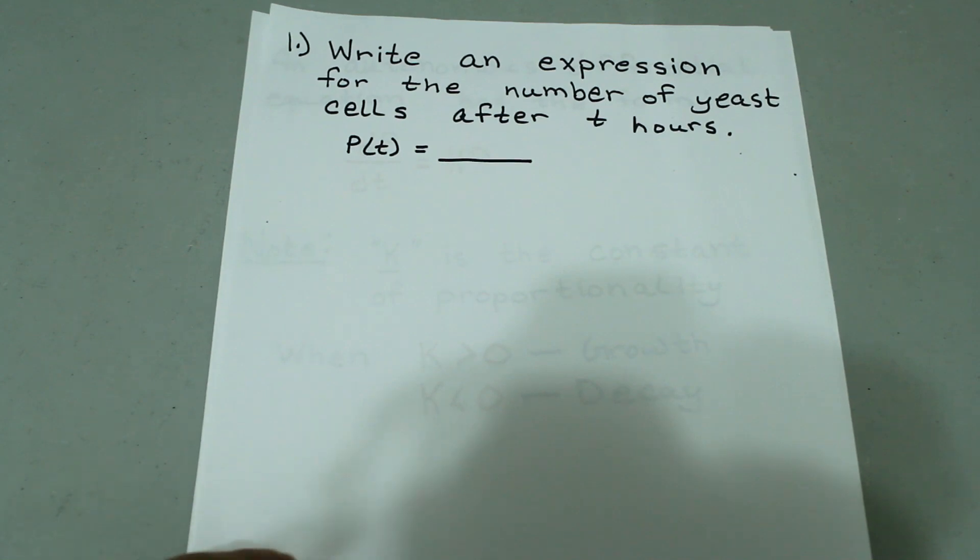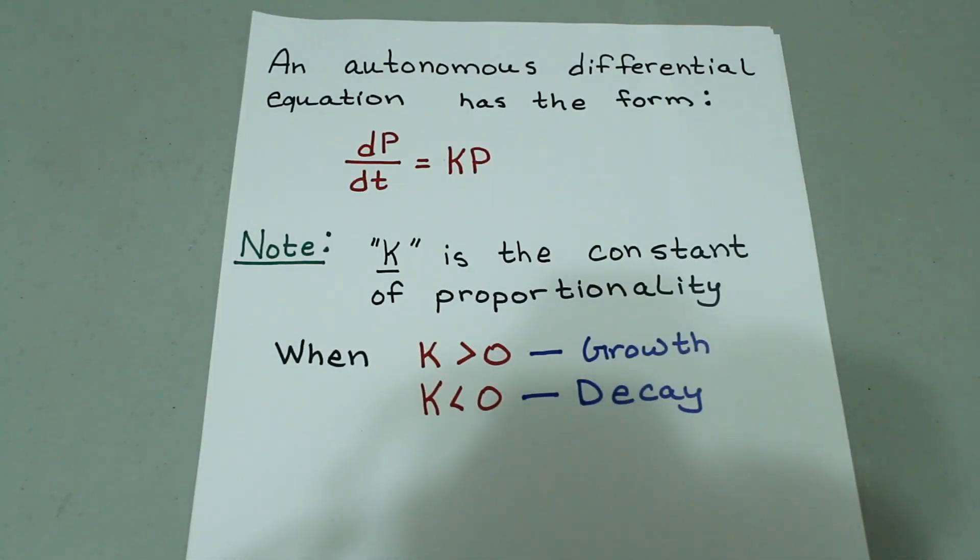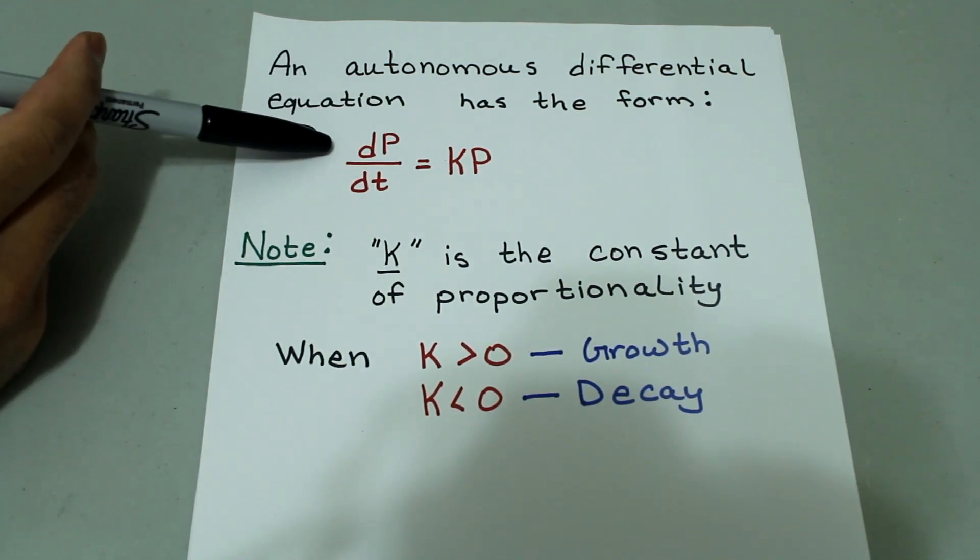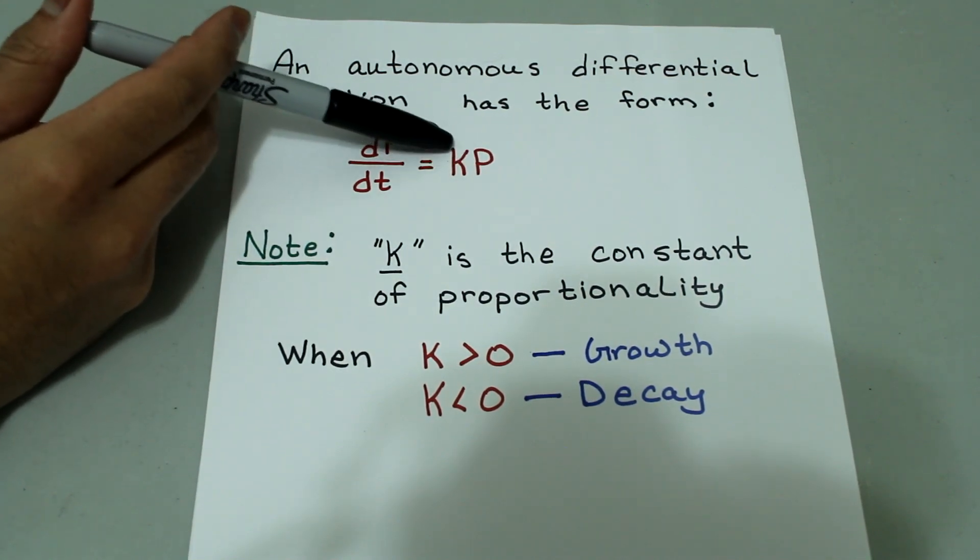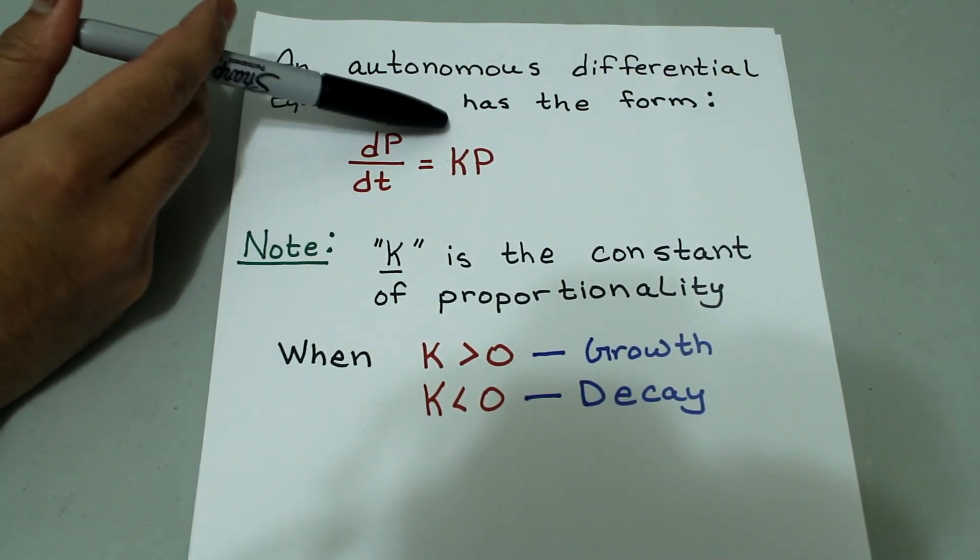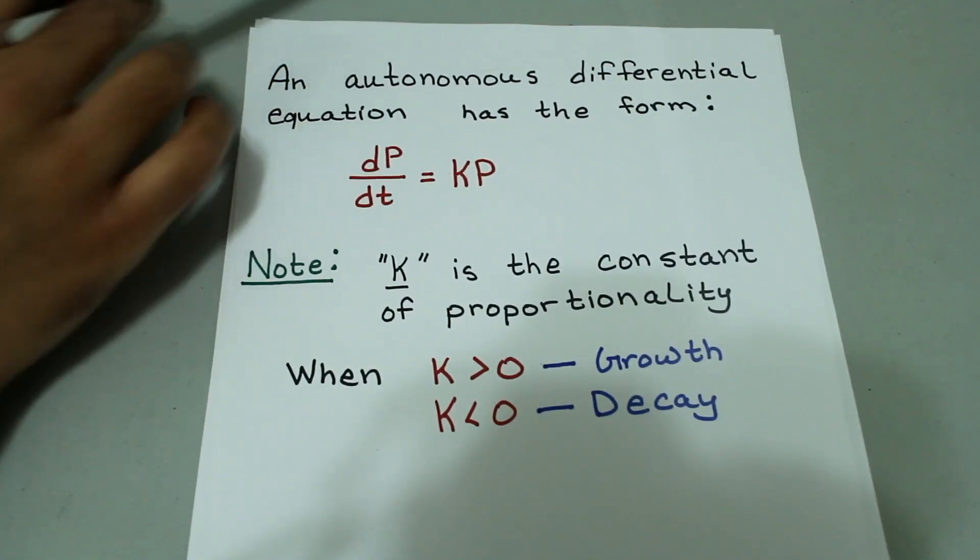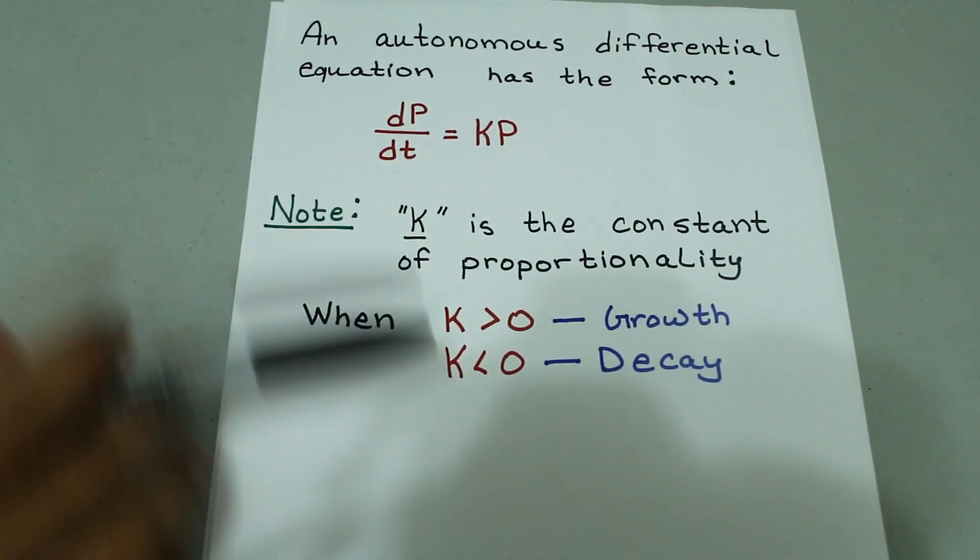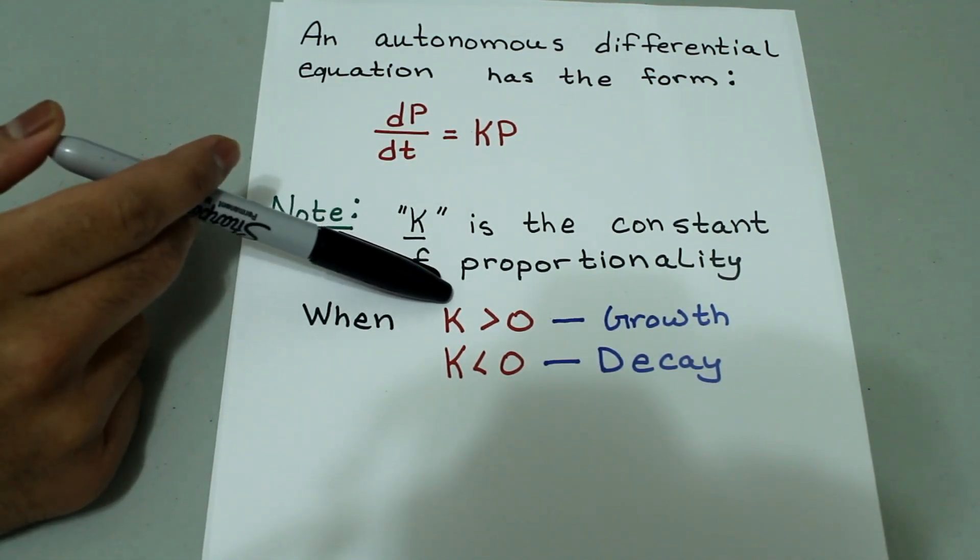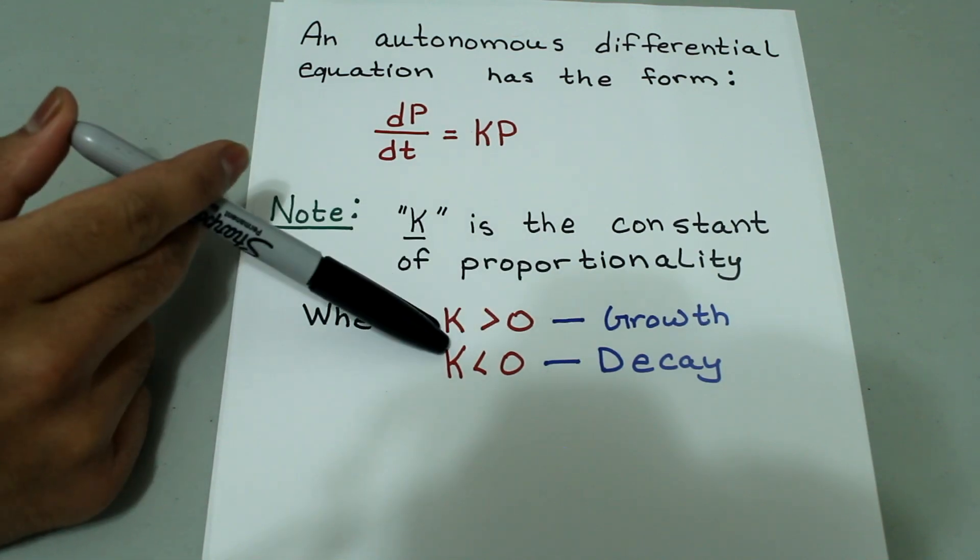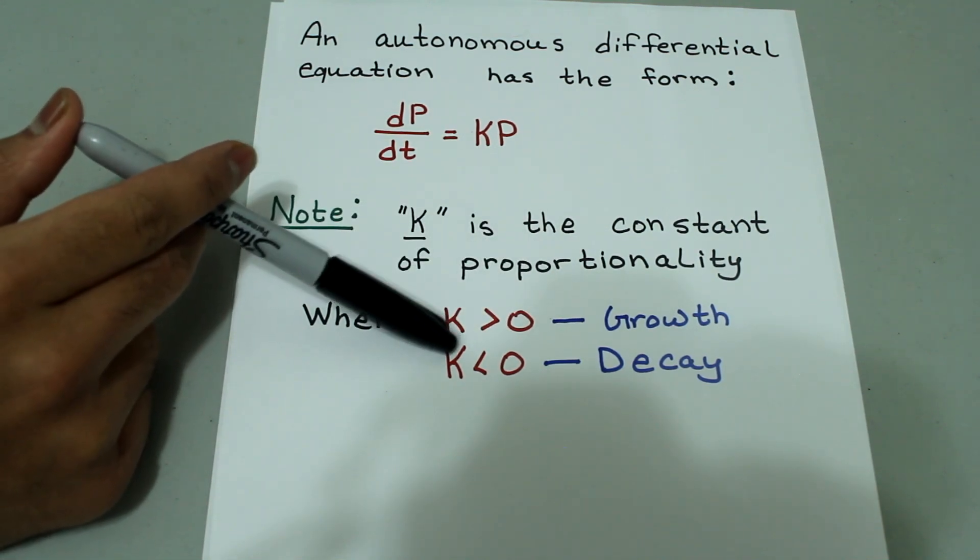Before we answer this question, let's go over a few things. An autonomous differential equation has the form dP/dt equals kP. Notice that this can also be called P prime, and P prime is not dependent on t. You don't see any t's on this side. So quick note: k is the constant of proportionality. When k is greater than 0, there is growth. And when k is less than 0, there is decay.